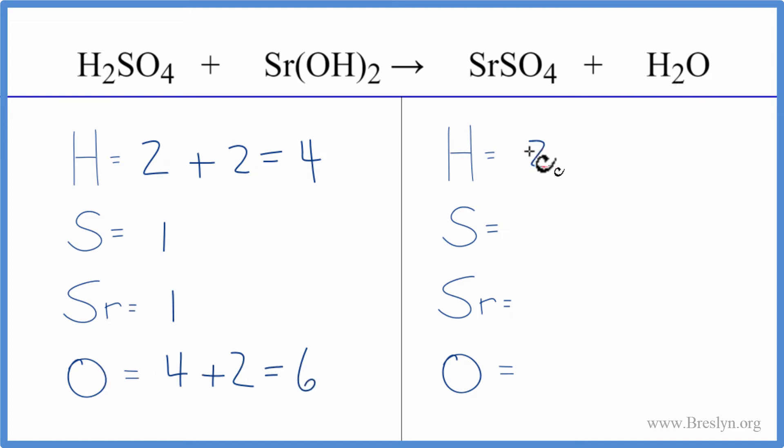On the product side, we have two hydrogens, one sulfur, one strontium, and four oxygens. Plus, we don't want to forget this oxygen over here, so we have five oxygen atoms. Let's leave the oxygens till last. Looks like we could balance the hydrogens.